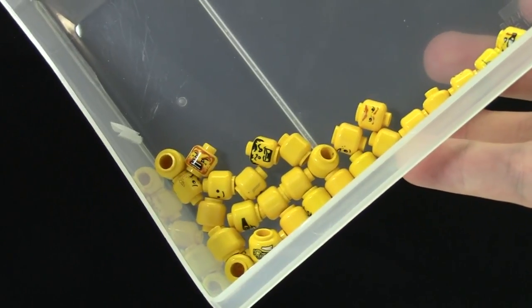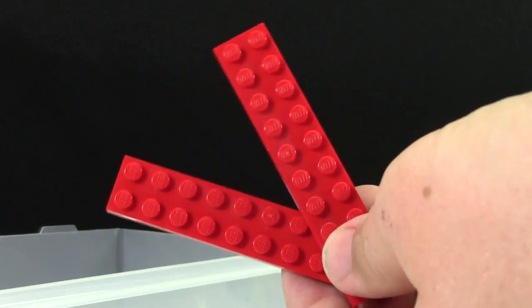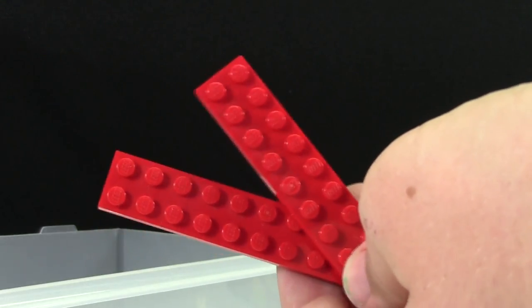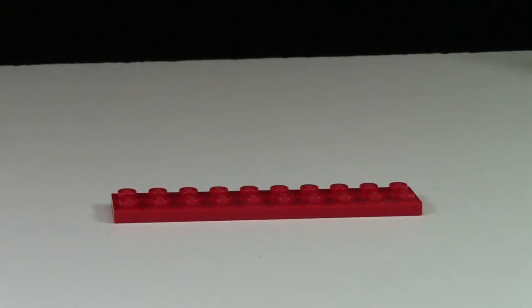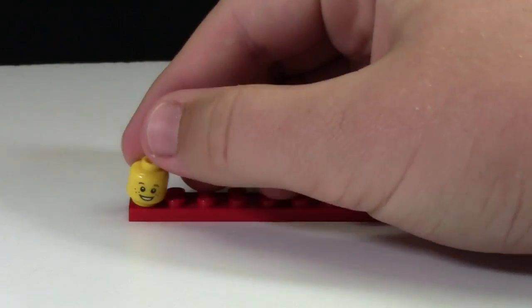To start off this process, you need all your Lego heads as well as whatever size plate you're going to be using. For the video, I'm going to use 2x10s. You're going to sit your 2x whatever plate down, it doesn't really matter, and you just want to get a handful of heads. And what you're going to do is you're going to put each head on a stud.